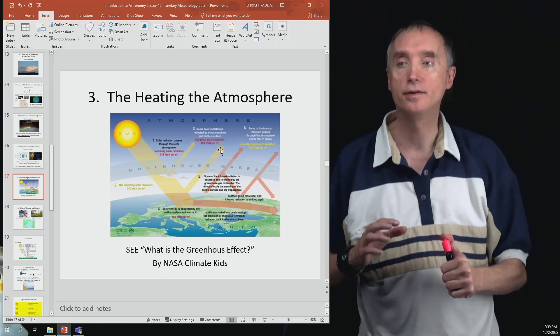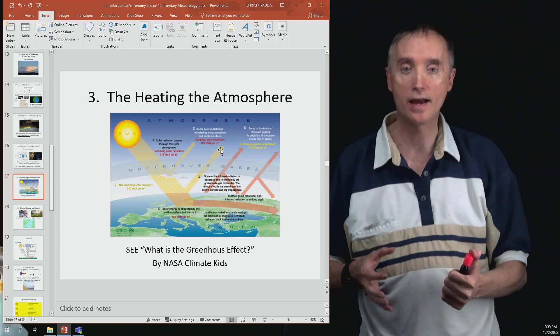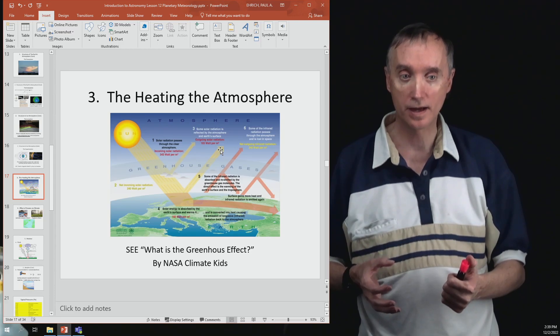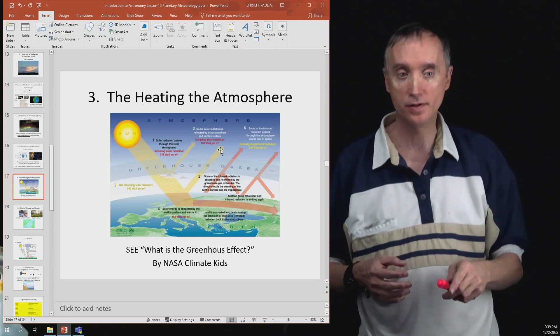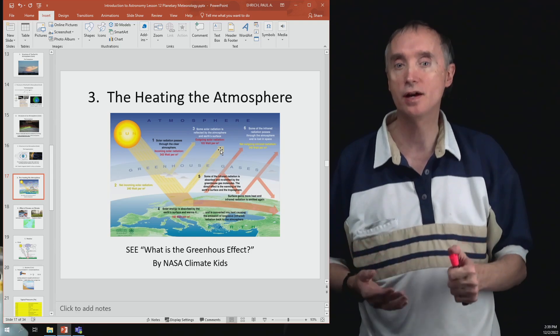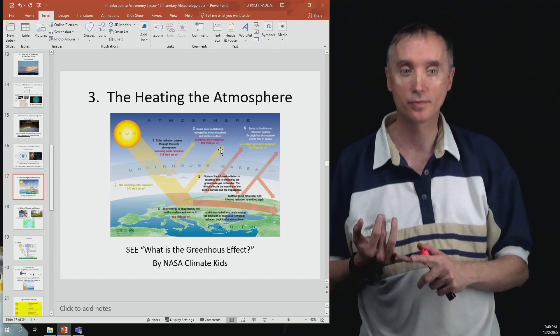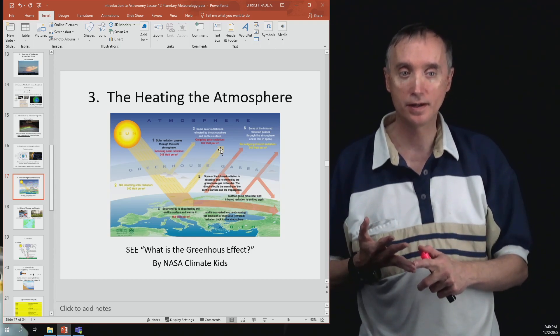Do you remember that Earth's atmosphere had these windows that would allow certain frequencies of light to come through? Well, we've already discussed that the gamma rays and X-rays can't get through.